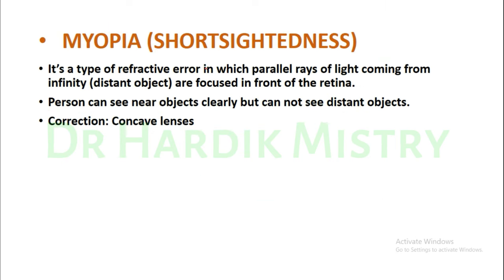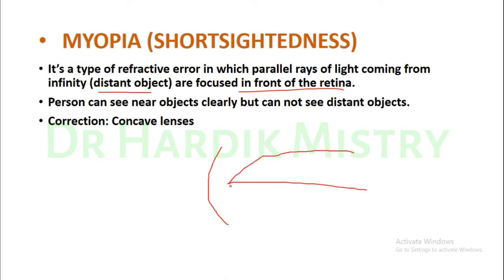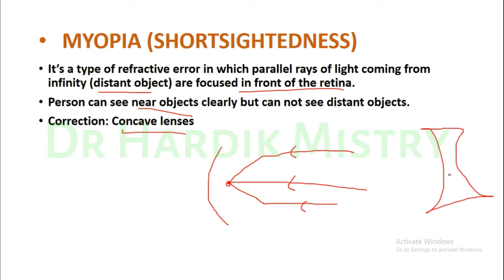Myopia, or short-sightedness, is a refractive error in which parallel rays of light from a distant object are focused in front of the retina. The person can see near objects clearly but cannot see distant objects. Correction is with concave lenses, which are diverging lenses that diverge light rays so they can be focused correctly on the retina.